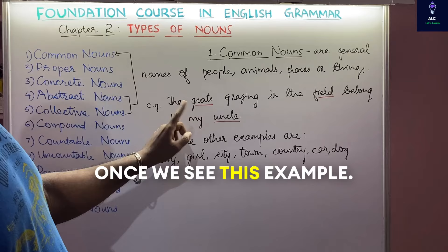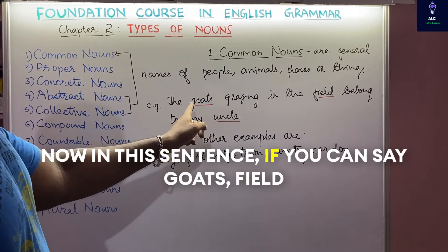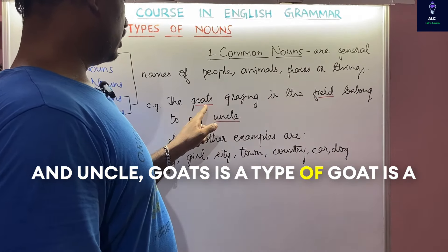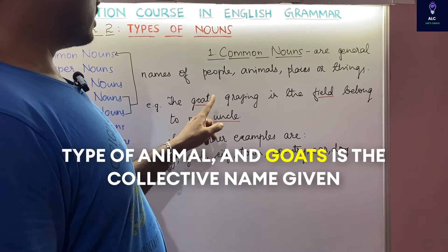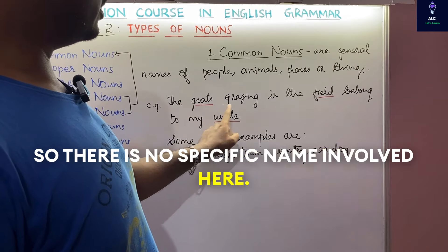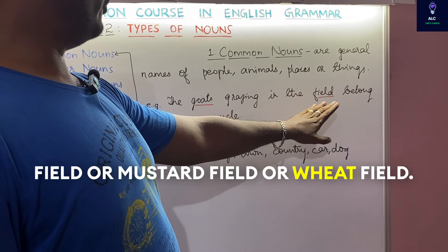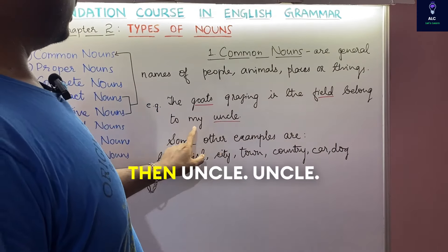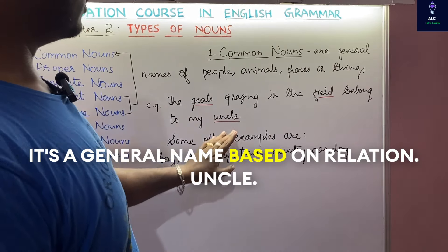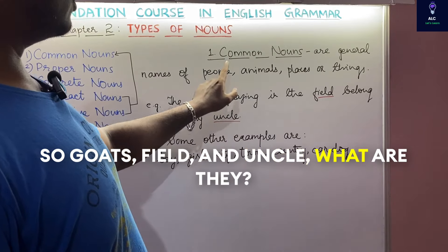Consider the sentence: 'The goats grazing in the field belong to my uncle.' In this sentence, the words goats, field, and uncle are common nouns. Goat is a type of animal and goats is a collective name given to a group of goats — no specific name is involved. Field is a general field; it's not specified whether it's a paddy field, mustard field, or wheat field. Uncle is a general name based on relation, and the name of the uncle is not specified. So goats, field, and uncle are common nouns.